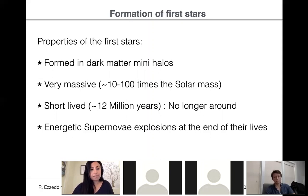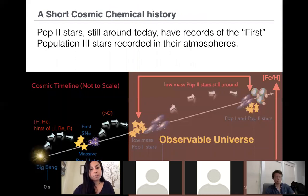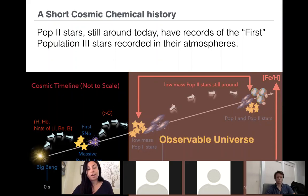First, the first stars must have formed in dark matter mini halos. They were very massive, ranging between 10 to 100 times the solar mass. However, it's difficult to place a very strict constraint on the masses, and I will talk about this later. They were short-lived because they were massive, so they are no longer around, and they must have exploded with energy. If we really want to place observational constraints on the properties of the first stars, we have to go back to the observable universe.